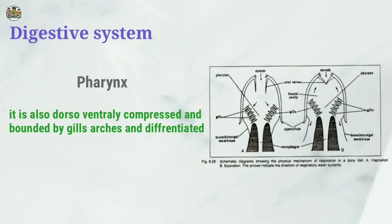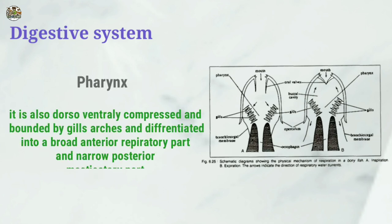The pharynx is also dorsoventrally compressed and bounded by gill arches. It is differentiated into a broad anterior respiratory part and a narrow posterior masticatory part.